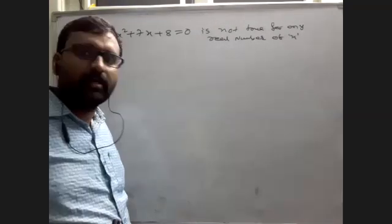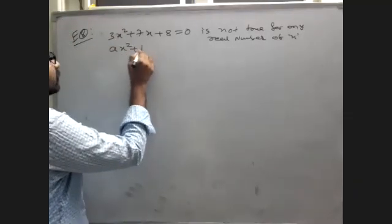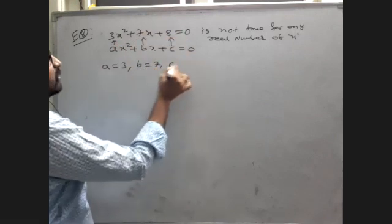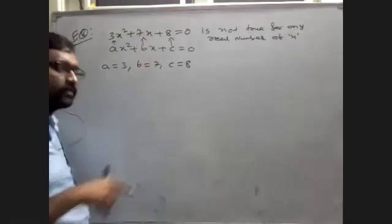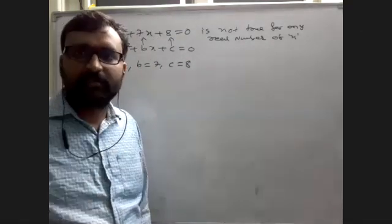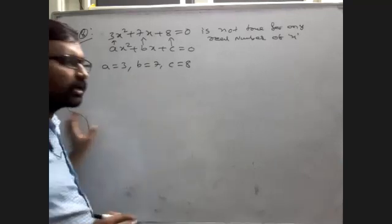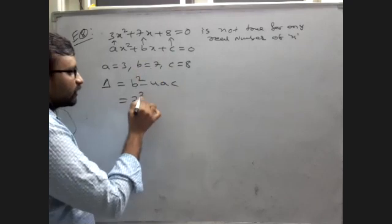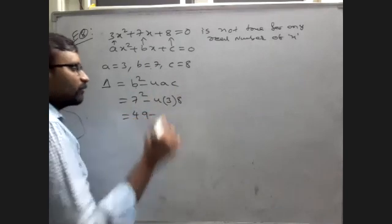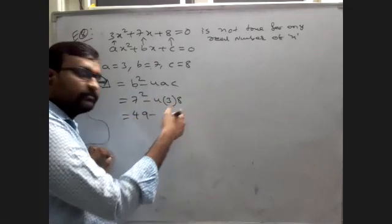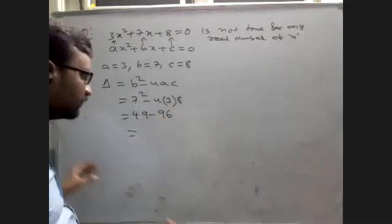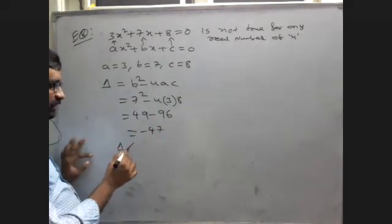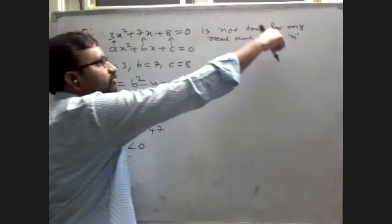Comparing with ax² + bx + c = 0: a = 3, b = 7, c = 8. Delta = b² - 4ac = 7² - 4×3×8 = 49 - 96 = -47. Clearly, Delta = -47, which is less than 0. Therefore, delta is less than 0, so this quadratic equation is not true for any real number of x.